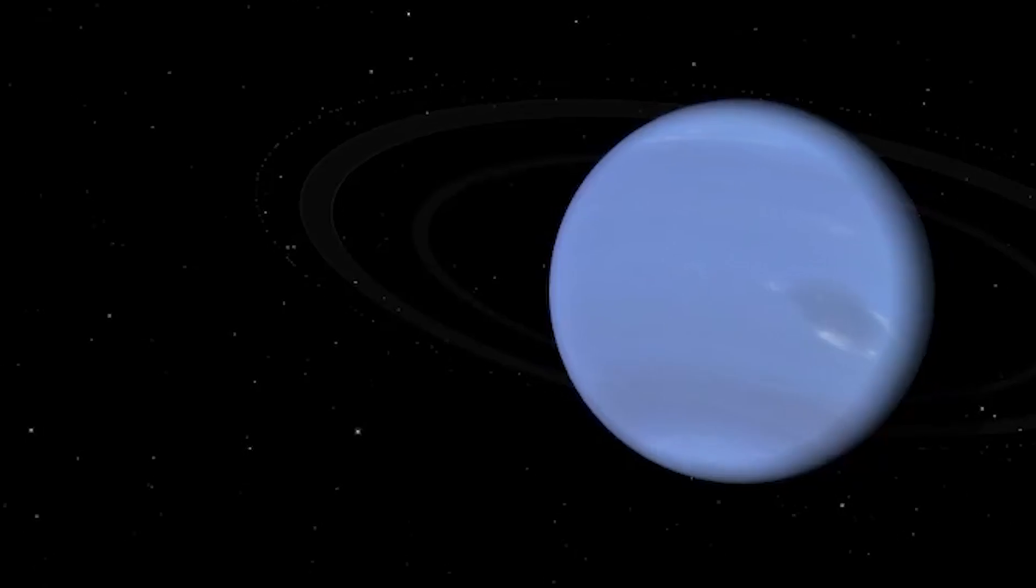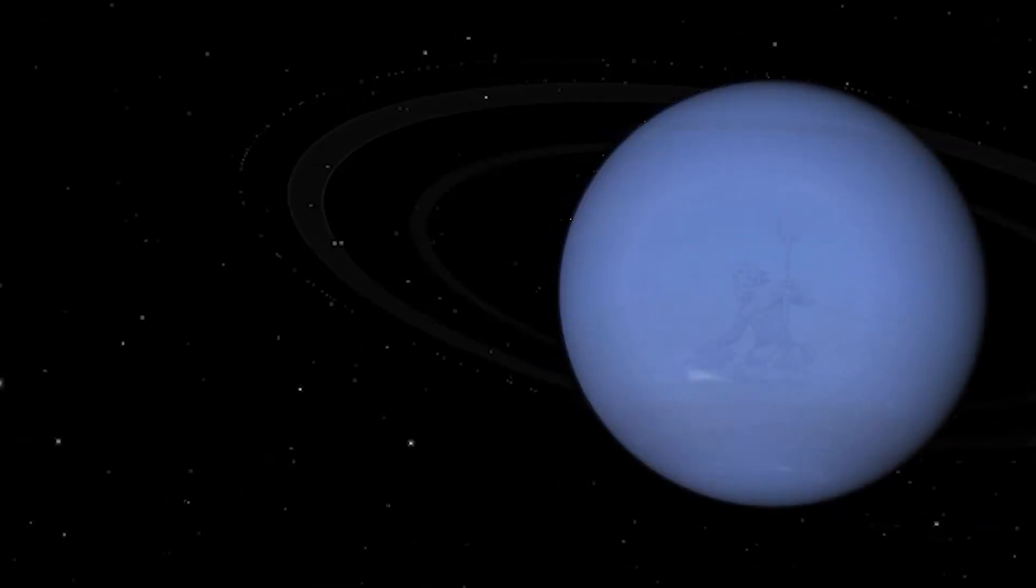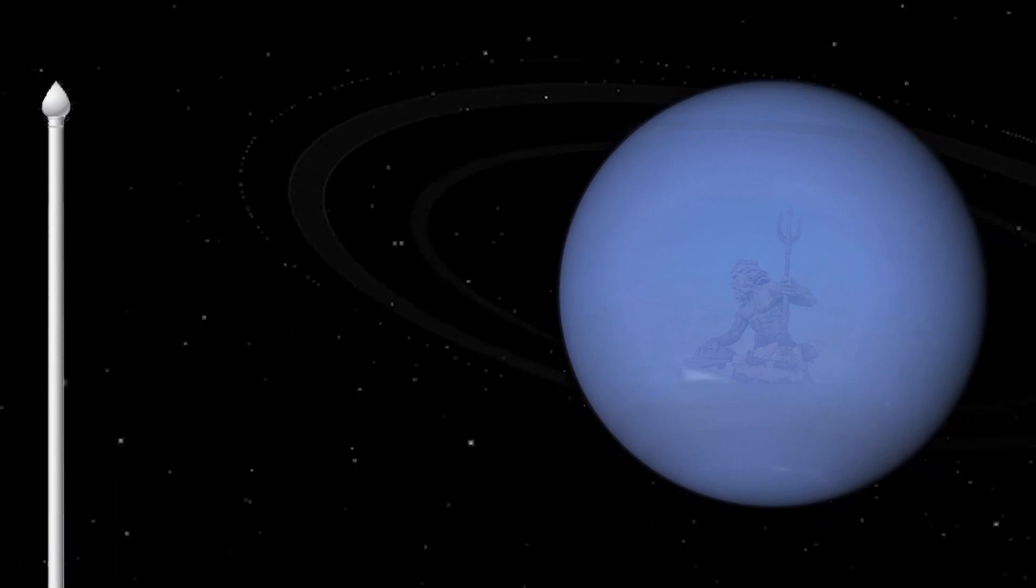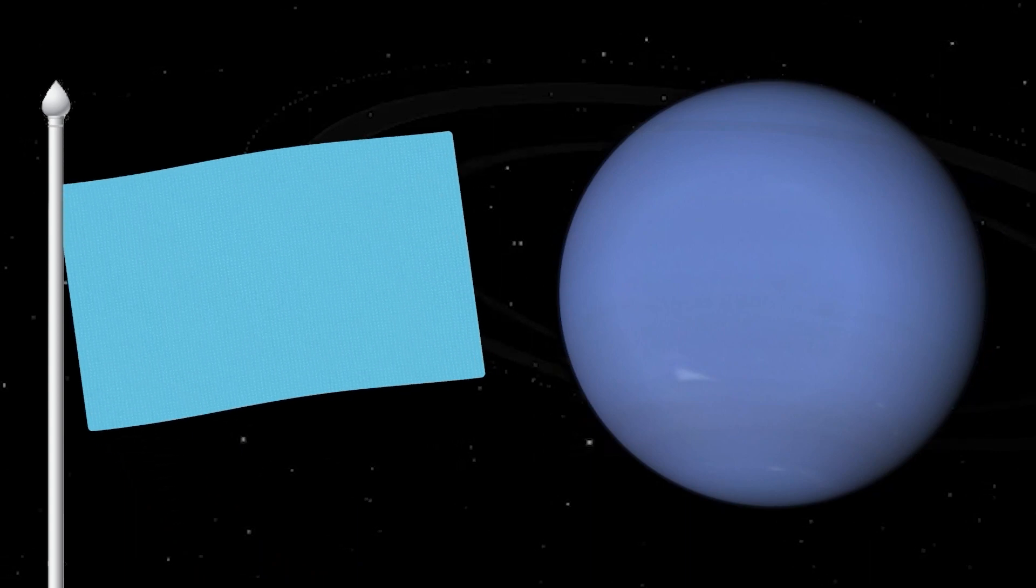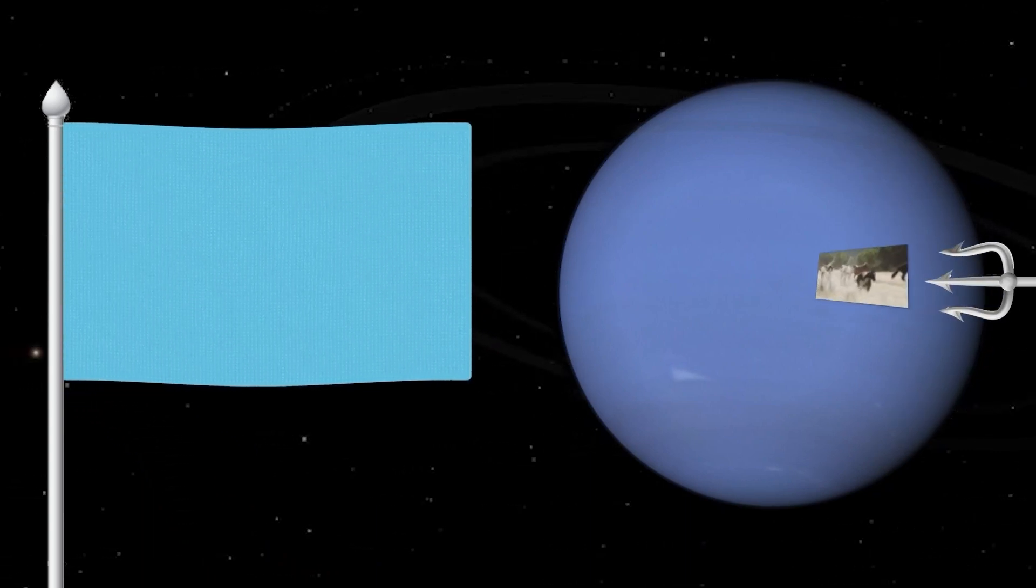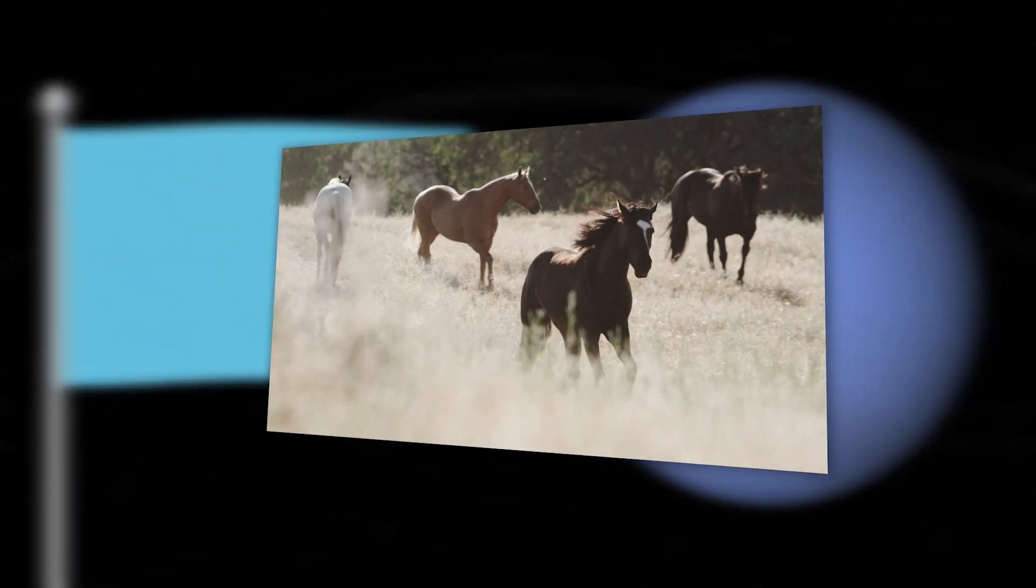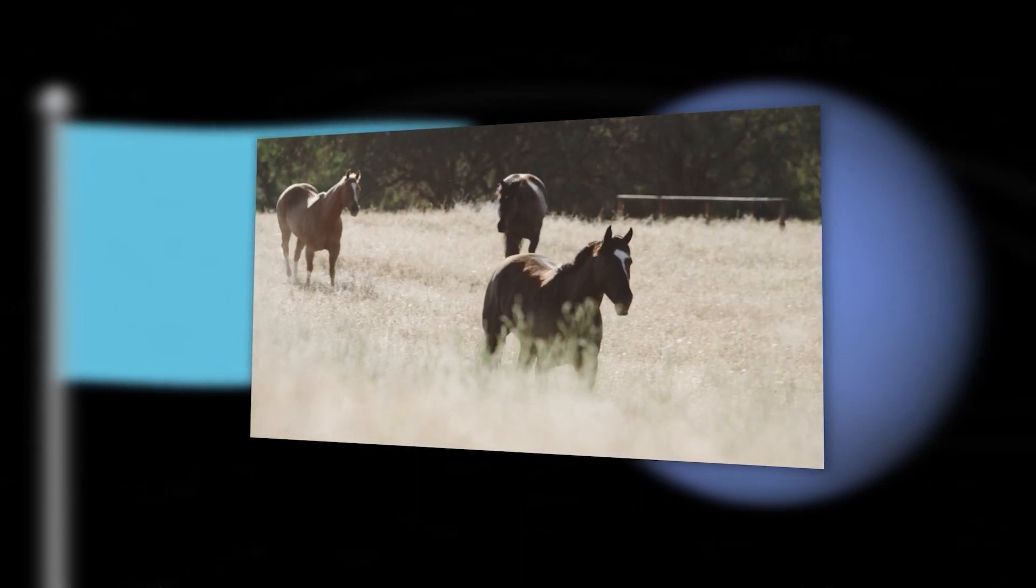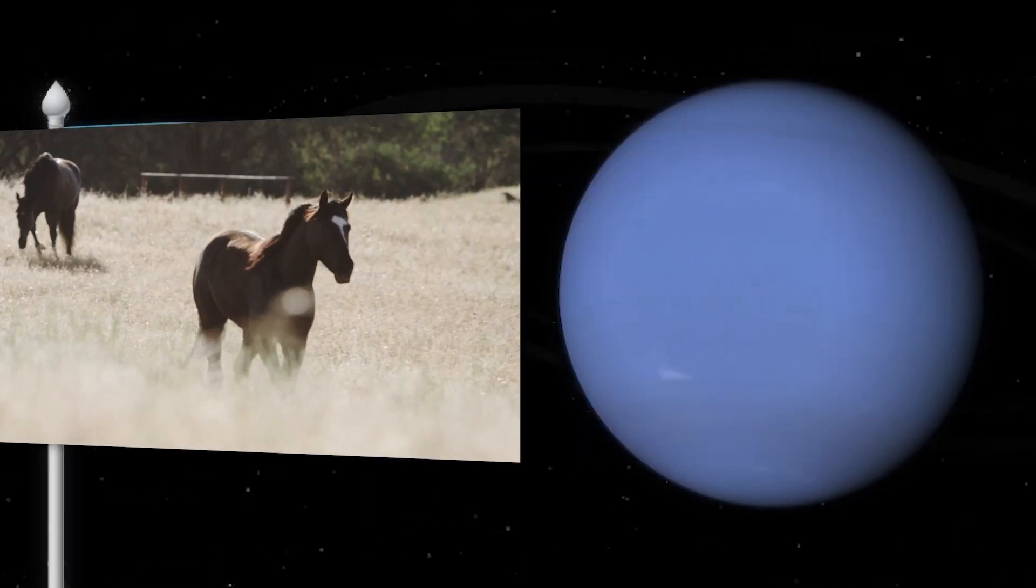The next planet is Neptune. Neptune is a god of water and the sea. This planet was named after the god because of its blue color and connection with the sea. By the way, according to the legend, Neptune created a horse by hitting the ground with a trident, resulting in a spring from which the first horse appeared.